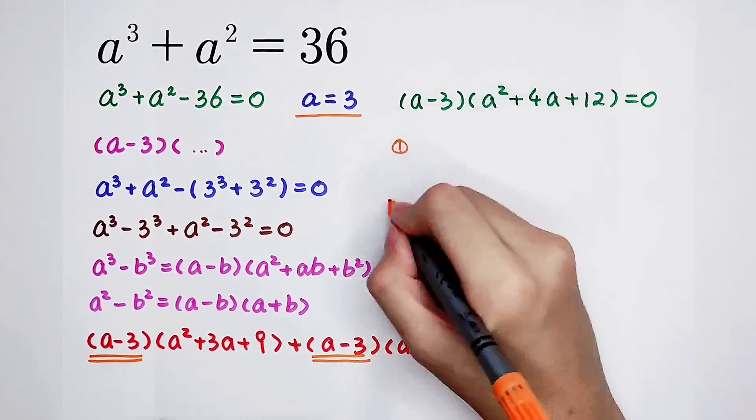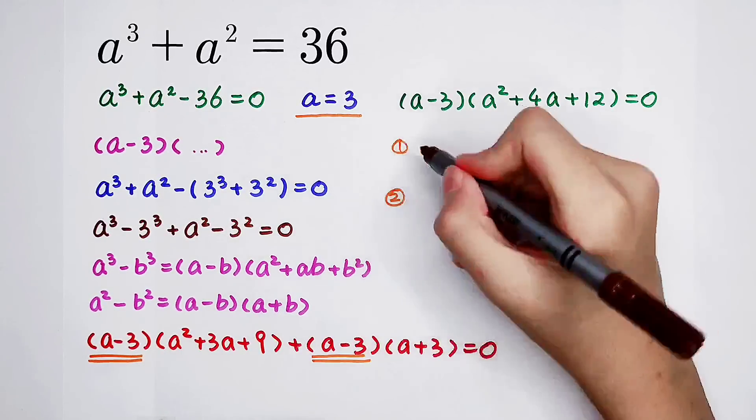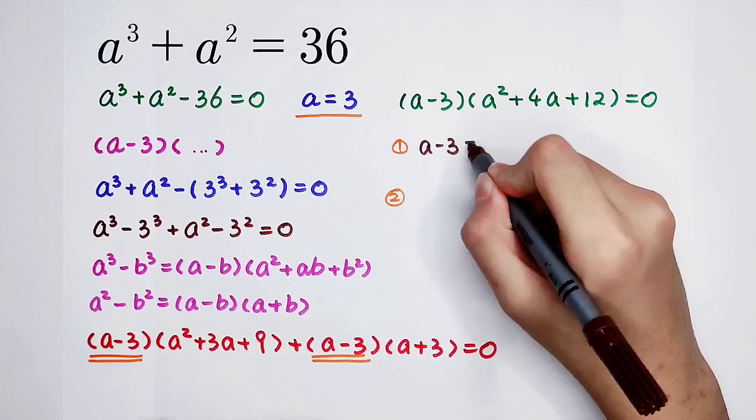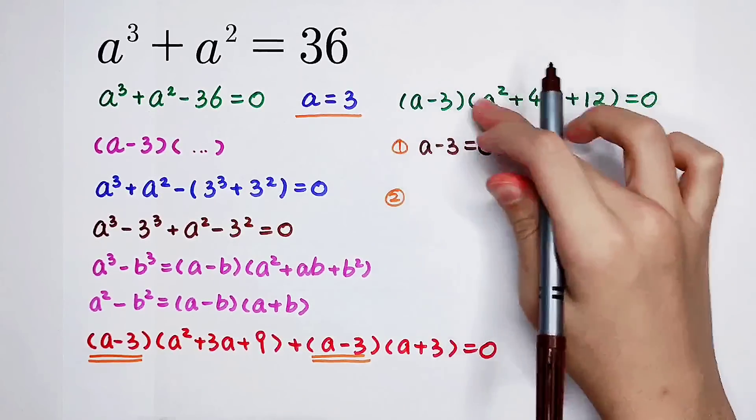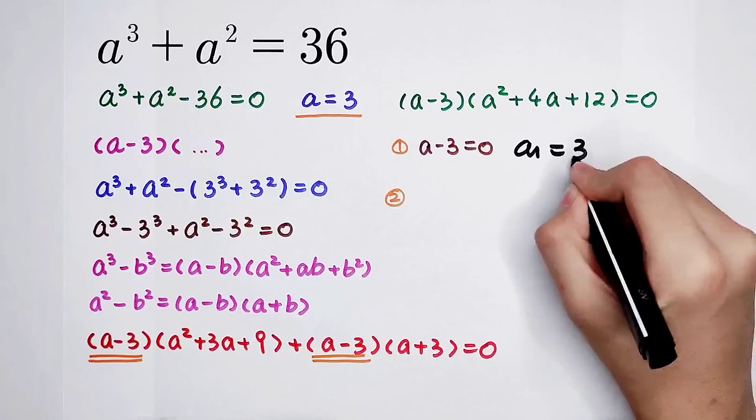The first case is a minus 3 equals 0. Then we can get the first root of our equation: a₁ equals 3.